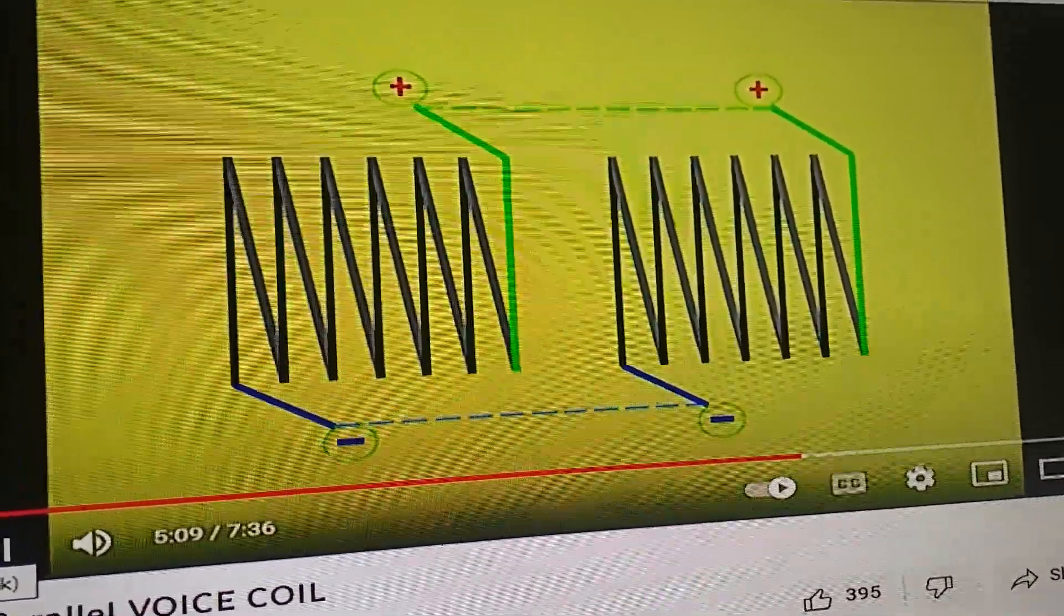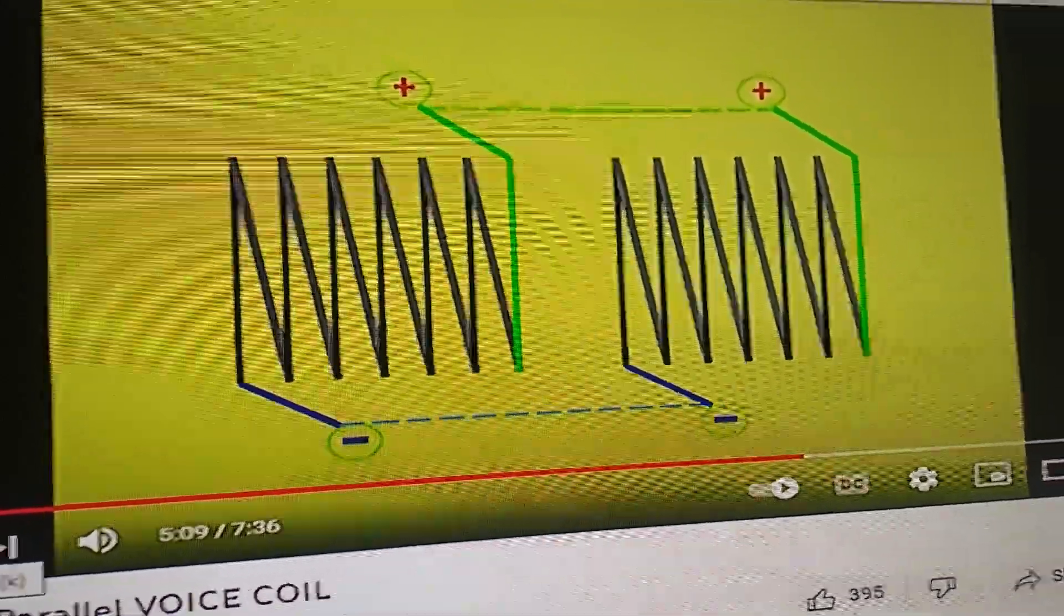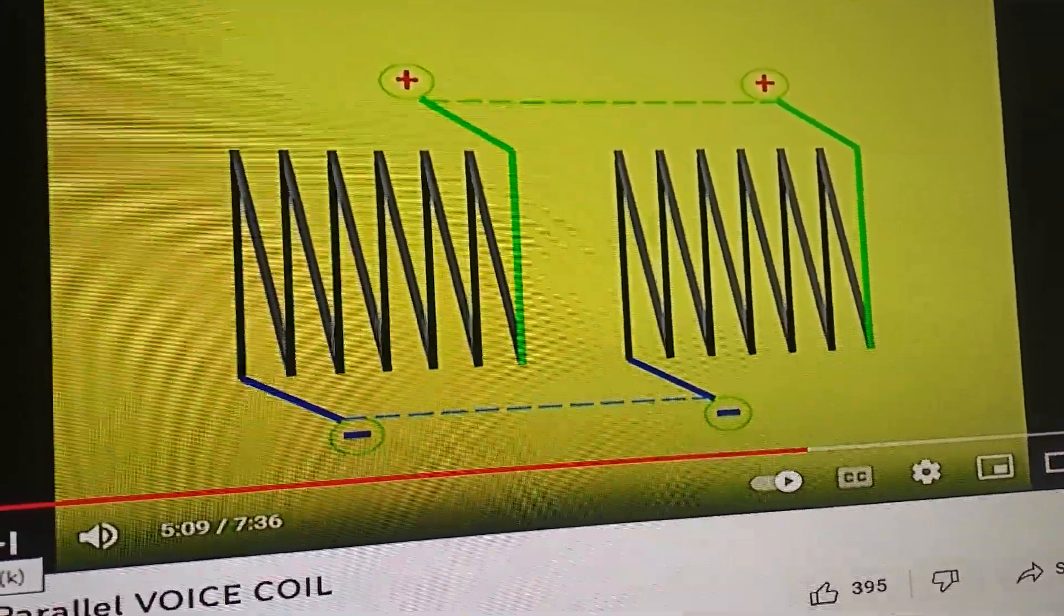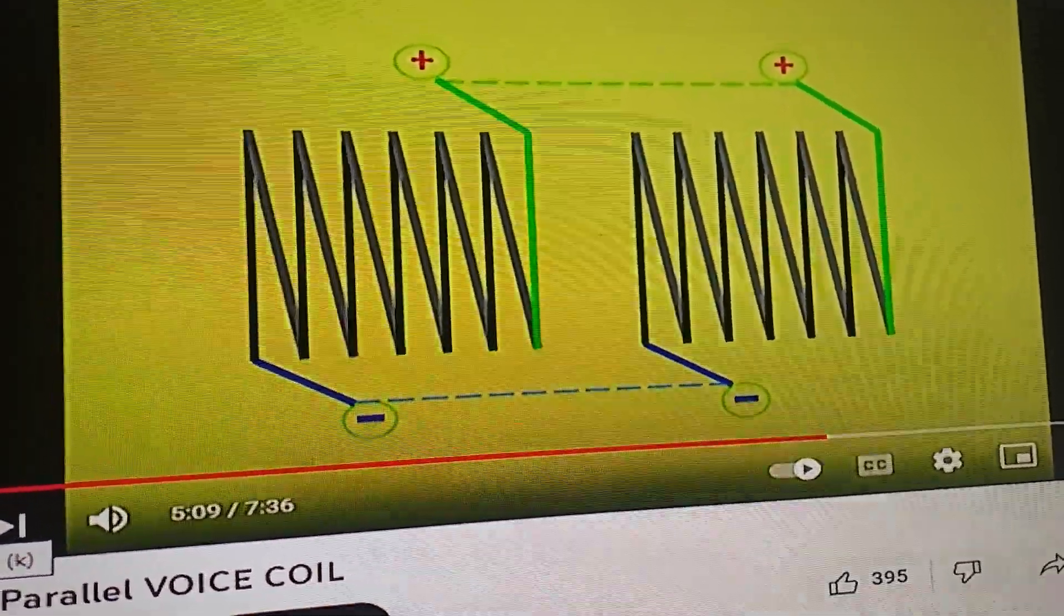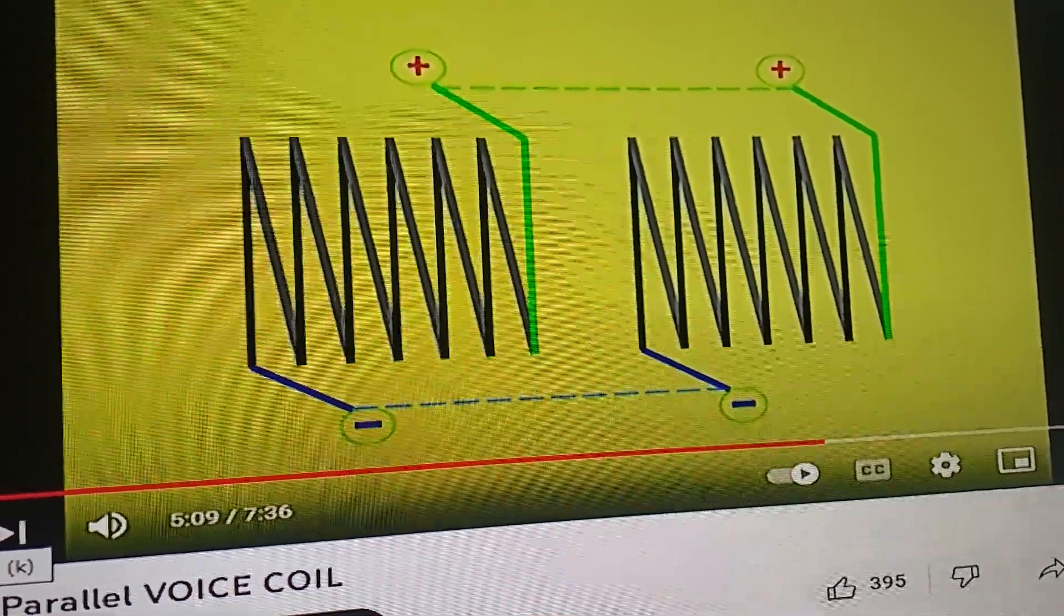If you wire them in series and you measure, the sensitivity is 89. If you wire in parallel, you have to go back and measure your voltage and it should be 2.83 volts.